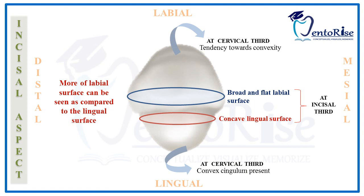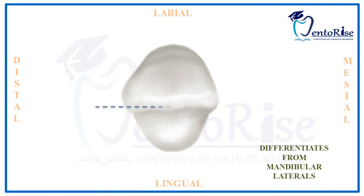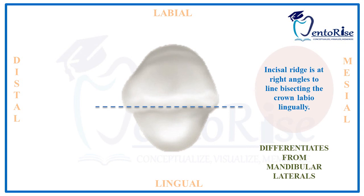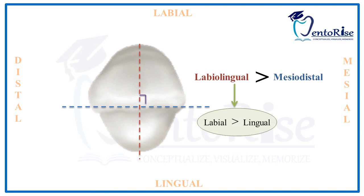This is an important point that differentiates the mandibular central incisor from the mandibular lateral incisor: the incisal ridge of a permanent mandibular central incisor is present at right angles to the line bisecting the crown labiolingually. Also, the labio-lingual dimension of a permanent mandibular central incisor as measured from the incisal aspect is greater in comparison to the mesodistal dimension, and even within the labio-lingual dimension, the labial dimension is greater compared to the lingual dimension.